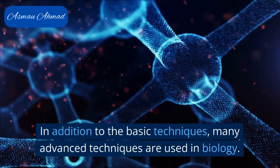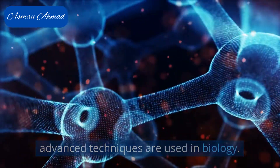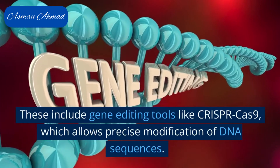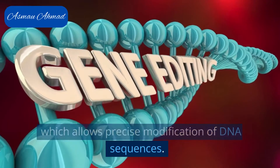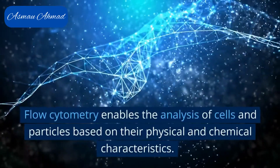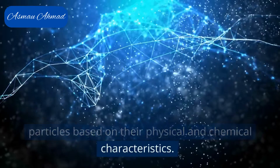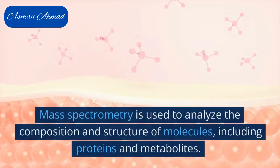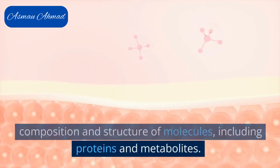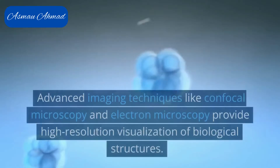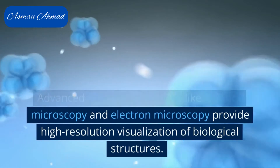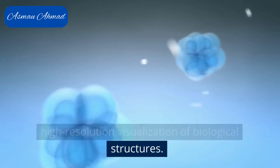In addition to the basic techniques, many advanced techniques are used in biology. These include gene editing tools like CRISPR-Cas9, which allows precise modification of DNA sequences. Flow cytometry enables the analysis of cells and particles based on their physical and chemical characteristics. Mass spectrometry is used to analyze the composition and structure of molecules, including proteins and metabolites. Advanced imaging techniques like confocal microscopy and electron microscopy provide high-resolution visualization of biological structures.